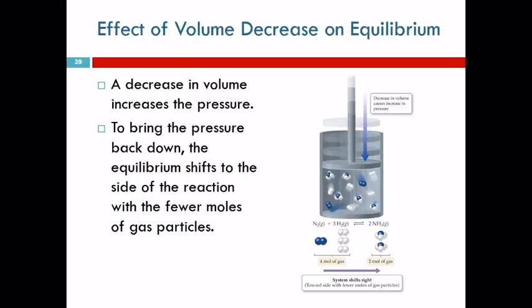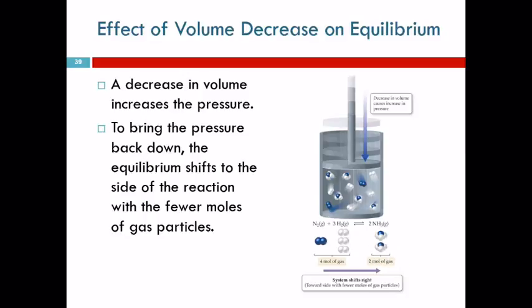The system says it doesn't like that — it was happy the way things were. What can it do to shift and reduce the pressure? Pressure is dependent on number of moles of gas. The product side of the reaction has two moles of gas; the reactant side has four. If the reaction shifts to the right, it can reduce the number of moles of gas, and that will reduce the pressure.